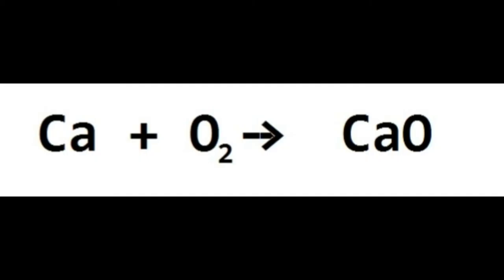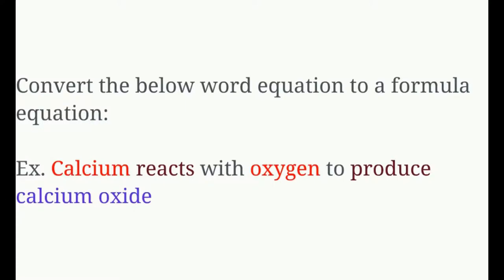This is the part where people get messed up on the test — they forget everything from unit four. When you do crisscross, it does end up being CaO, but you need to know why. Notice, though, there's an issue: how many calciums on the left? One. How many oxygens on the left? Two. How many oxygens on the right? One. We're going to have to balance this.